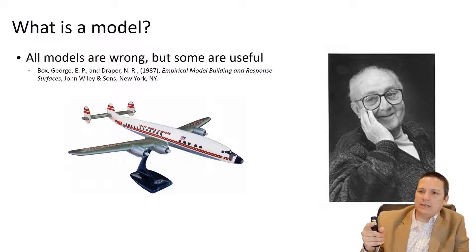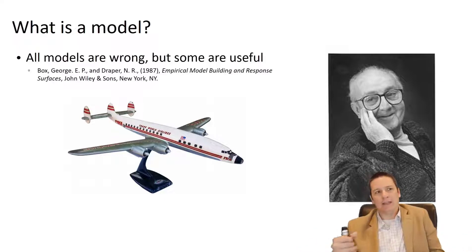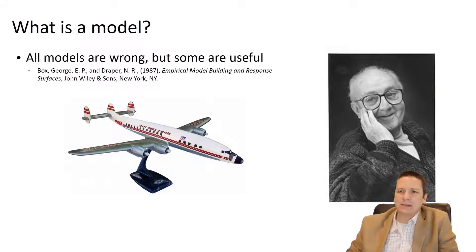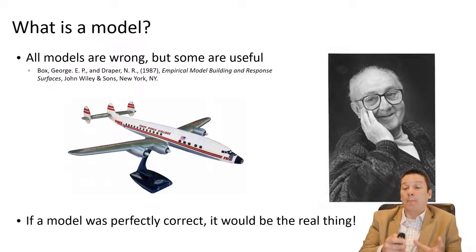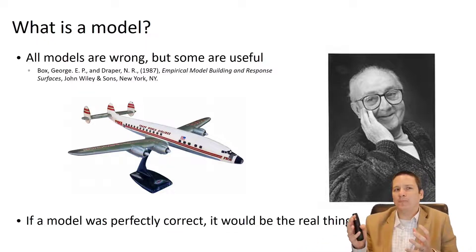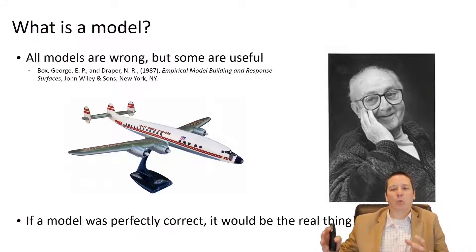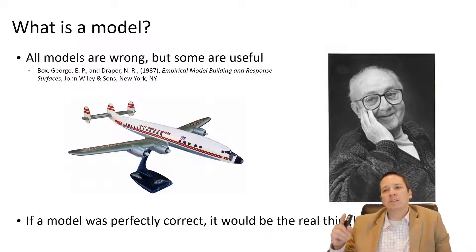But eventually if we make the airplane bigger and bigger and give it a working engine, working landing gear, working doors, working windows, and put seats in there — what eventually happens? It becomes an actual airplane. It ceases to be a model of an airplane and becomes an airplane. So by virtue of being a model, it can't perfectly represent what it is a model of. So all models are wrong, but some are useful.